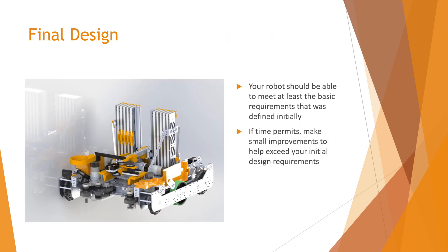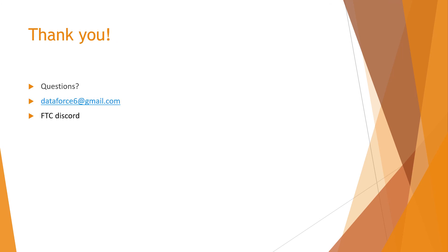Your robot should be able to meet at least the basic requirements that were defined initially. It is always good to make small improvements during the season to exceed the initial design requirements. By exceeding your design requirements, you will have a better chance of having a competitive robot. Thank you for watching this video and we hope it was helpful. If you have any questions, please email us at data4sets@gmail.com or send us a message to any one of our team members on the FTC Discord. Thank you.